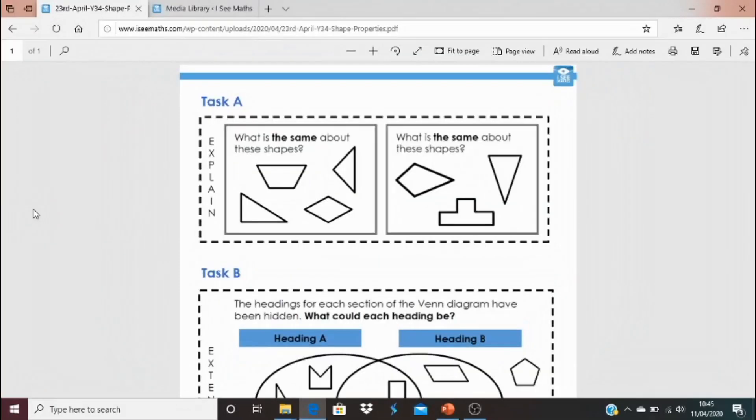Now there are two tasks you can do if you want to take your learning a little bit deeper today. Task A and task B. So for task A have a look at those shapes. Can you think about anything that's the same about these shapes? And what about the three shapes on the right? Can you think about anything that's the same about those three?